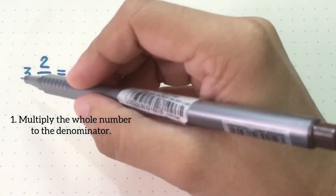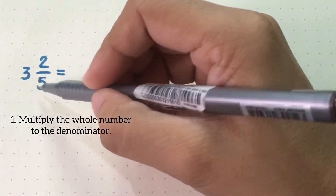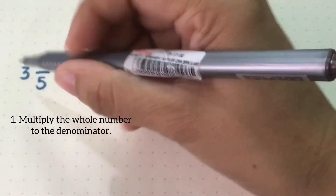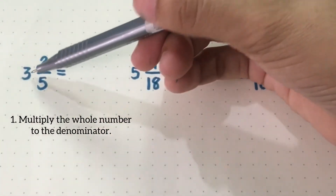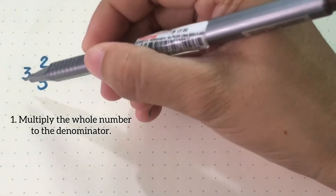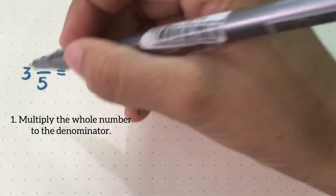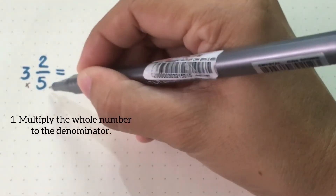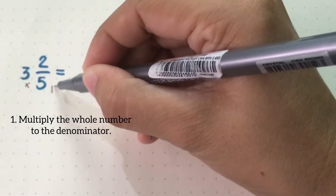First, multiply the whole number and the denominator. For example, we have here 3 and 2 fifths. Multiply 3 and 5, and it will give you 15.